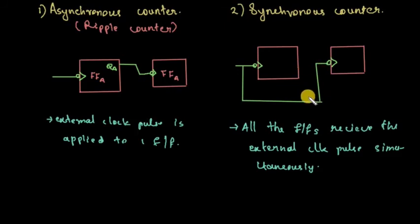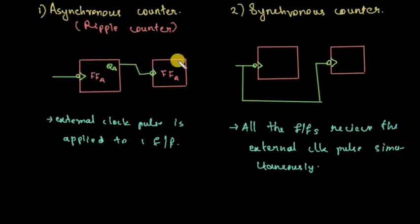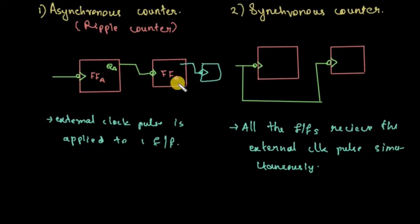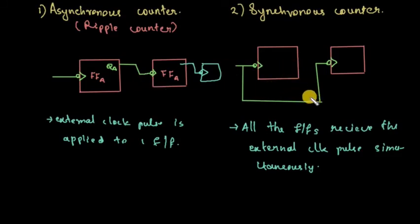In asynchronous counters, the circuit becomes complicated as the number of states increases. The speed is slow because the clock propagates through the stages one by one — this is called the ripple effect. In synchronous counters, all flip-flops receive the clock simultaneously, so the speed is high.